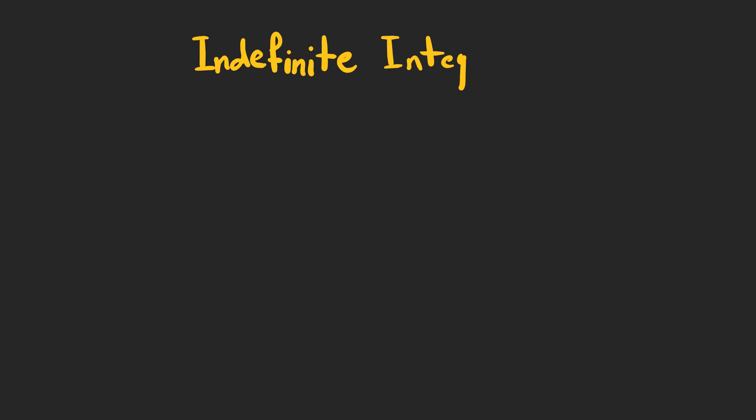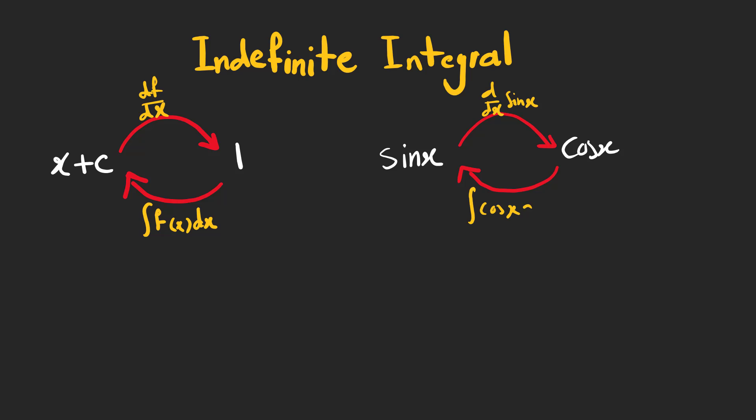We also have indefinite integrals which are anti-derivatives. For example, if we take the derivative of x plus a constant with respect to x, it yields 1 and integrating the answer gives x plus a constant again. Or if we do this for sine x, it yields cosine x and the anti-derivative is sine x again. More exactly, the integral of cosine x with respect to x yields sine x plus a constant. We must always consider a constant in our integration because the derivative of a constant with respect to x is always zero.